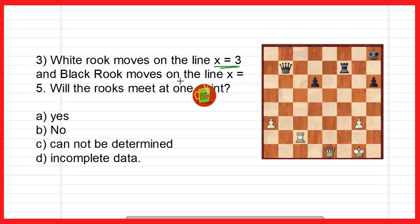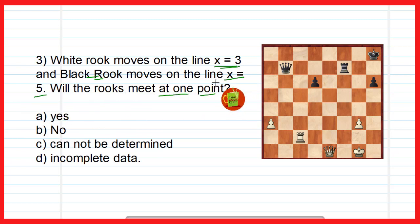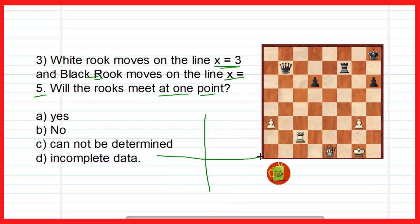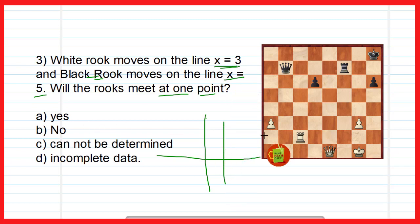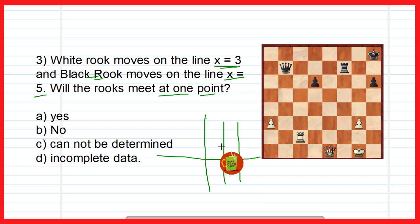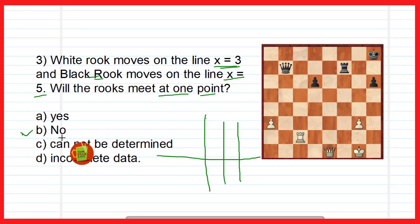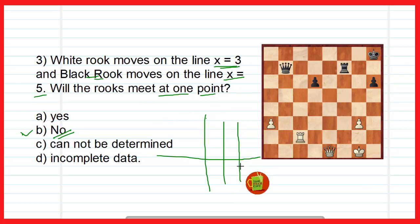Question 3: White rook moves on the line x = 3 and black rook moves on the line x = 5. Will the rooks meet at one point? The line x = 3 is parallel to the y-axis, and x = 5 is also parallel to the y-axis. Both lines are parallel to the y-axis, which means they are parallel to each other. Therefore, the two rooks will never meet at one point. Option B is correct — No, the rooks will not meet, because both lines are parallel.